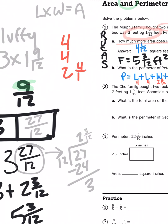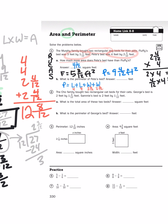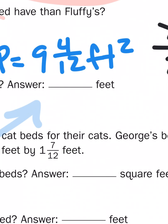4 plus 4 plus 2 and 4 twelfths and 2 and 4 twelfths. 4 plus 4 is going to give me 8, 8 twelfths. 4 plus 4 is 8, plus 2 more is 10. It's going to give me a total of 12 and 8 twelfths as my perimeter. 12 and 8 twelfths feet.